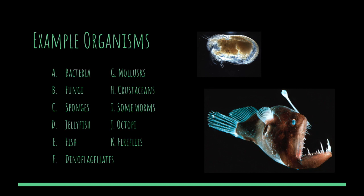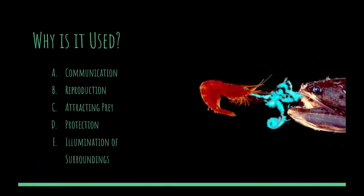Some examples of organisms that use bioluminescence are shown here. To the right is a Caribbean ostracod and a female anglerfish. The male Caribbean ostracod uses its self-produced light to attract mates, while the anglerfish uses its bulb filled with bioluminescent bacteria to lure prey. In addition to attracting mates and luring prey, bioluminescence can also be used for communication, protection, and illumination. The picture on the right depicts how bioluminescence can be used to startle or confuse a predator.